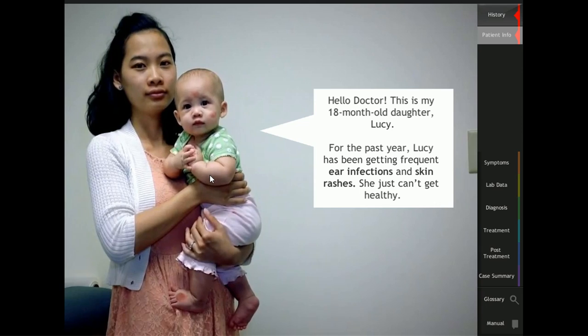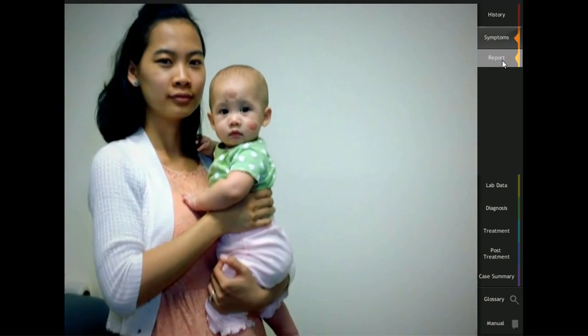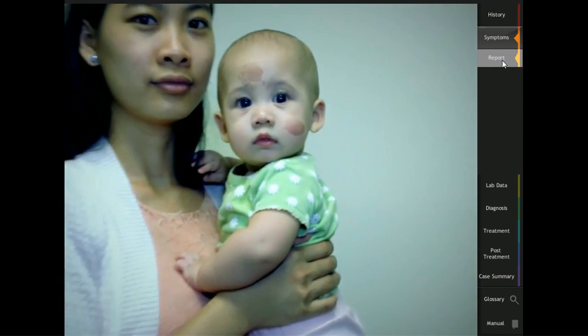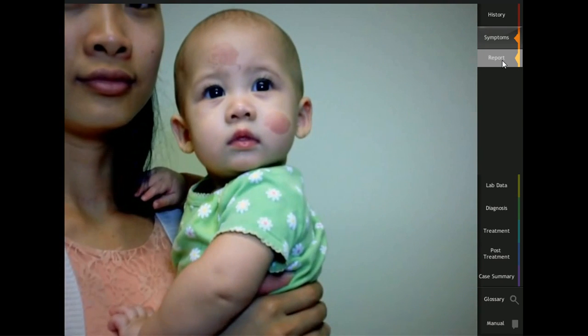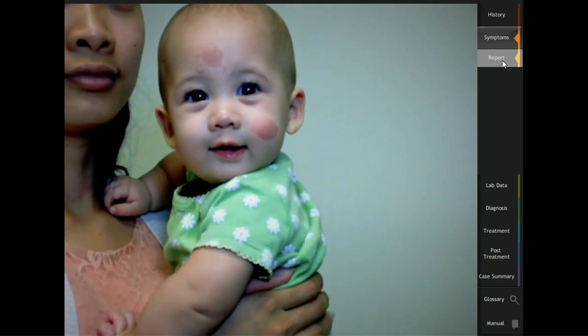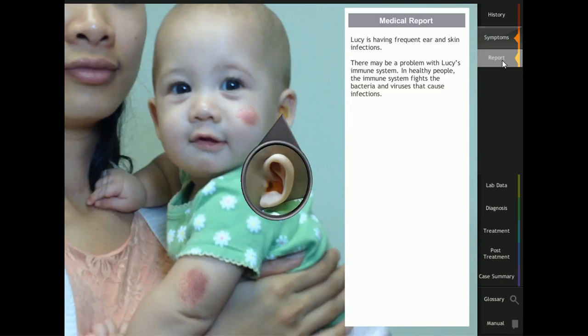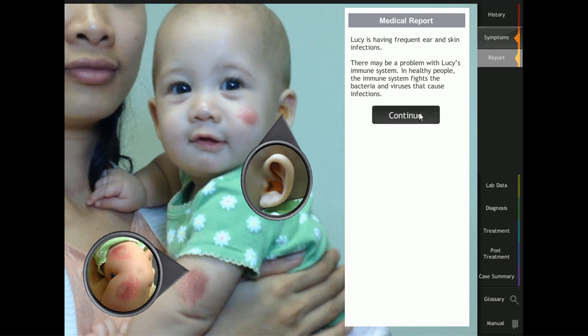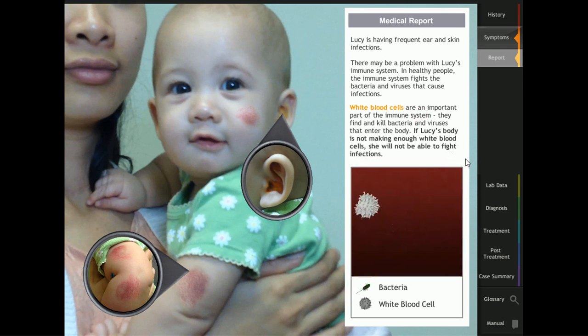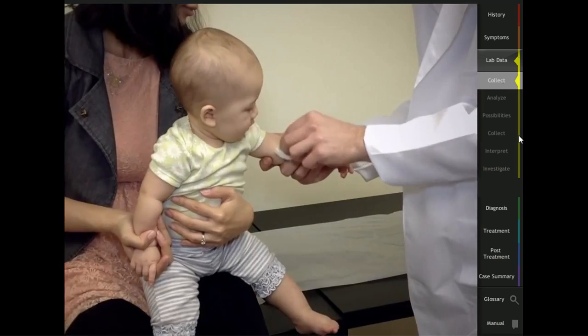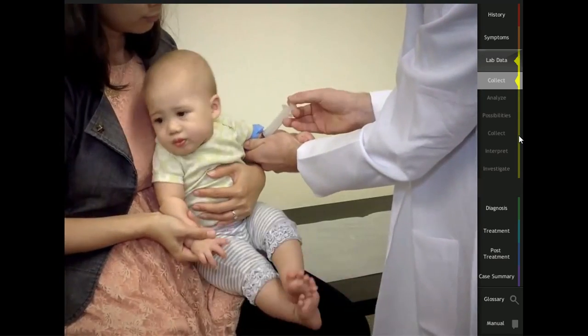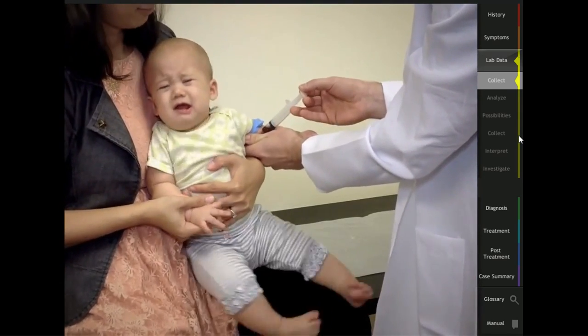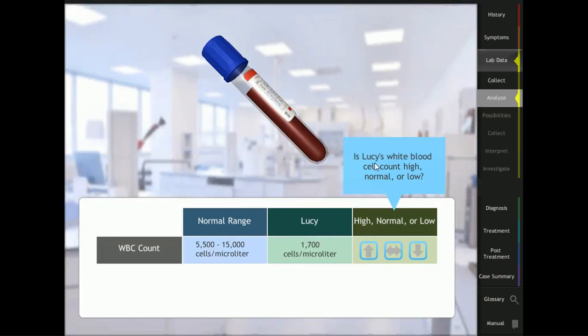In this case, students role play a pediatrician to help Lucy, a patient who is experiencing frequent ear infections and rashes, which indicate an issue with her immune system. Students first analyze a sample of Lucy's blood to determine which of two possible diseases she has.